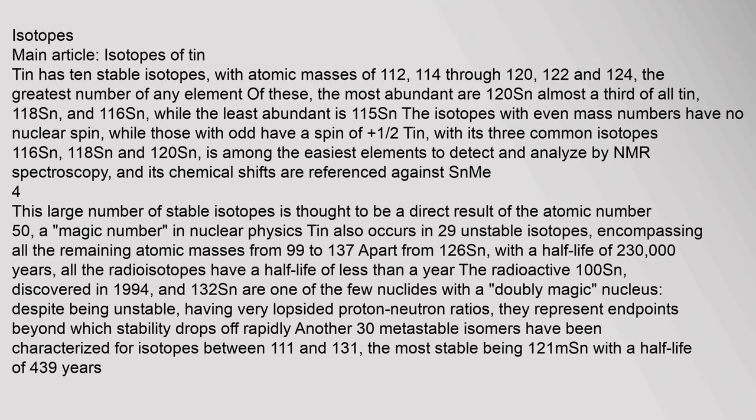Tin has 10 stable isotopes with atomic masses of 112, 114 through 120, 122 and 124 — the greatest number of any element. Of these, the most abundant are 120Sn (almost a third of all tin), 118Sn, and 116Sn, while the least abundant is 115Sn. The isotopes with even mass numbers have no nuclear spin, while those with odd have a spin of one-half.